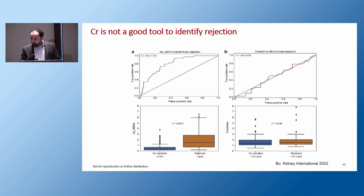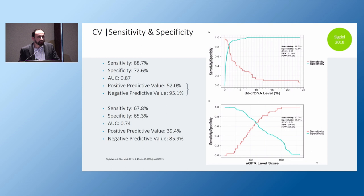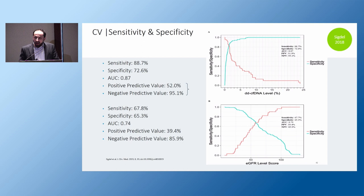From the Admiral study published in Kidney International last year, the same principle holds: creatinine is not a good marker for rejection. Cell-free DNA was significantly higher in cases of rejection. The way I look at it, cell-free DNA is more a continuous number. The higher the cell-free DNA — more than 1% — the higher the specificity and positive predictive value. The lower the cell-free DNA — less than 1% — the higher the sensitivity and negative predictive value.